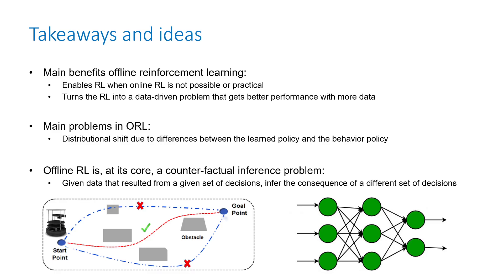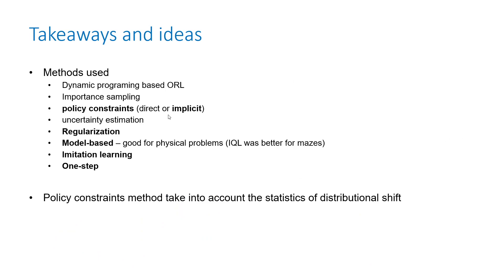To summarize this presentation: the main benefits of offline reinforcement learning are that it enables RL for cases when online RL is not possible or practical, and it turns the RL problem into a data-driven problem convenient when you have a lot of data. The main problem is distributional shift — when the learned policy and the behavior policy diverge significantly. Offline RL is good for compositional stitching where you assemble the optimal path from pieces, but not good when the optimal path is entirely absent from the collected data. Data coverage is critical.